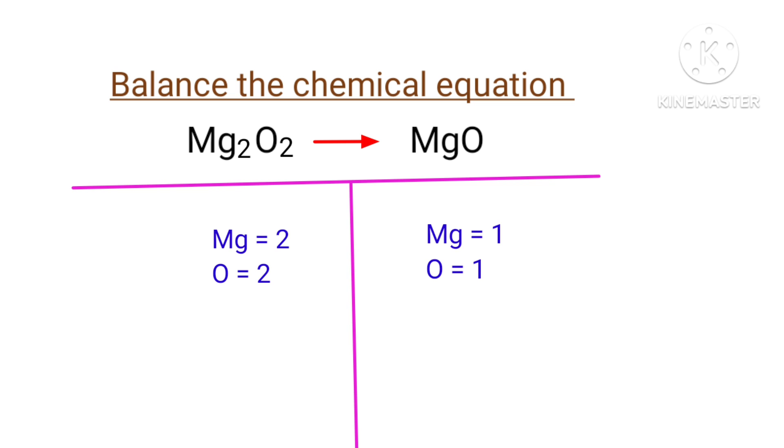In this equation, the left hand side, I have 2 magnesium atoms and I have 2 oxygen atoms, and the right hand side, I have 1 magnesium atom and I have 1 oxygen atom.